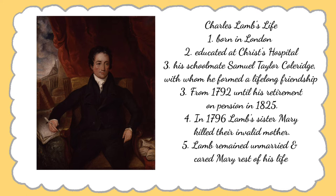During that visit he fell in love with a young lady whom in his essays we can find as Alice Winterton, and in his poems as Anna — the lady unfortunately married to a pawnbroker, Barchan. The failed love affair with Alice made his life a ruined one. It is quite difficult to say whether his madness was the cause or the result of the breaking of his friendship. But soon afterwards he recovered from the madness and Lamb appeared in print.